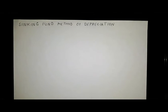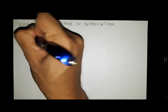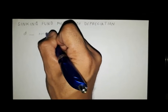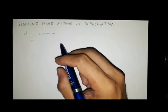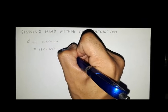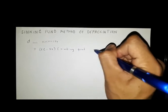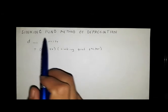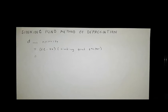The sinking fund method of depreciation is a method where the annual uniform depreciation D is an annuity, determined by multiplying the difference of the first cost and salvage value by the sinking fund factor. That is why it is named the sinking fund method.